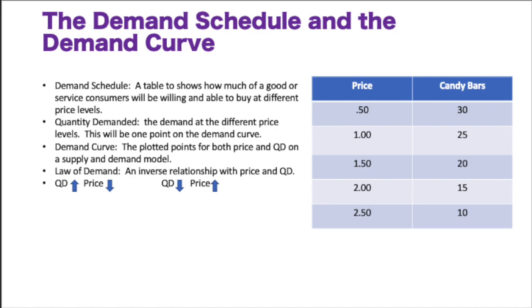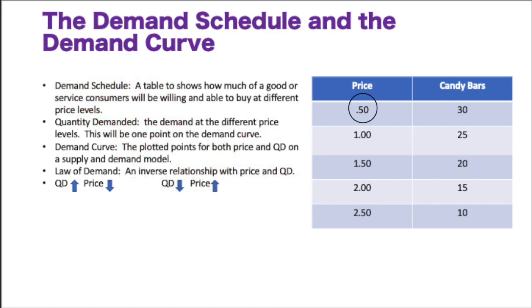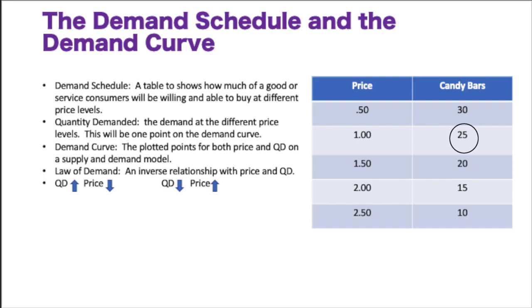The demand schedule and the demand curve. A demand schedule is a table that shows you how much of a good or service consumers are willing and able to purchase at the different price levels. Here you see candy bars — it's for an individual. At $0.50, Daniella would be willing and able to purchase 30 candy bars. If the price is $1, she would purchase 25 candy bars, and so on. Each of these represents one point on the demand curve.